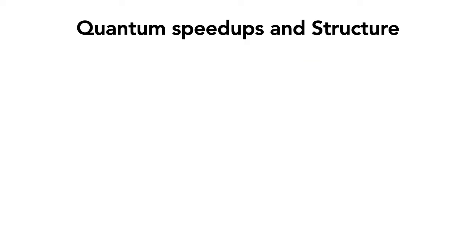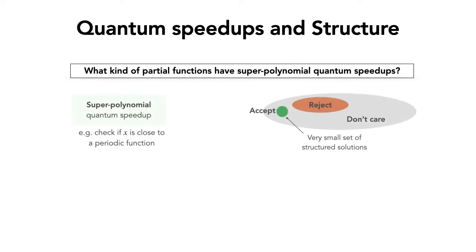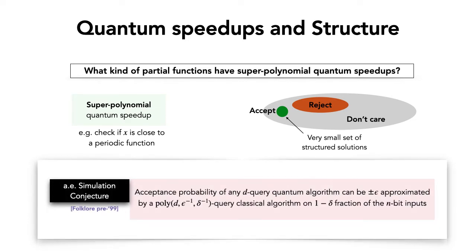So the next question is: what sort of partial functions can have super-polynomial speedups? Looking at all known examples with super-polynomial speedups — like checking whether a function is close to periodic — there is usually a very small set of structured solutions. For instance, the set of periodic functions is much smaller than the set of functions far from periodic, and quantum algorithms excel at finding these small structured sets. This motivates a folklore conjecture from the 90s: the almost everywhere simulation conjecture.